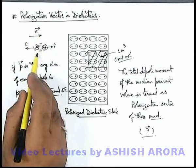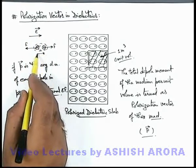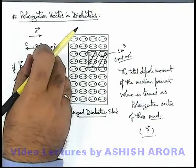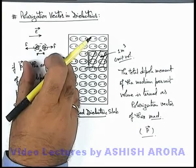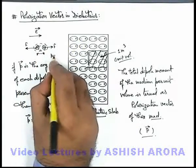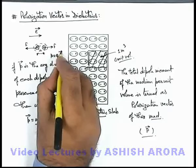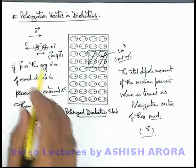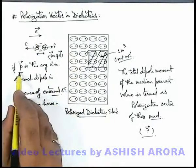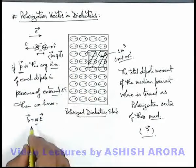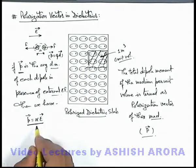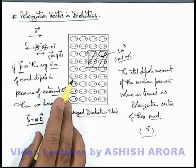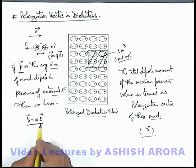If the electric field increases, the separation between the two centers will also increase due to the increase in this force. So we can say if the separation between positive and negative centers of a dipole increases, its dipole moment increases, because the dipole moment is simply written as q·d, where d is the separation between the positive and negative centers. So as electric field increases, the average dipole moment of each atom also increases, and it can be written as alpha·E.